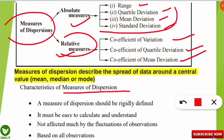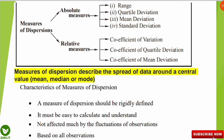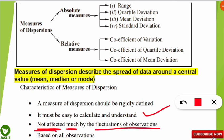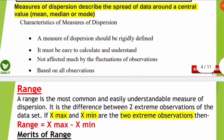Now we will know the characteristics of measures of dispersion, as these questions are also asked in the theoretical part. First, a measure of dispersion should be rigidly defined. Second, it must be easy to calculate and understand. Third, it should not be affected much by the fluctuation of observations — it can be affected, but not much. Finally, it should be based on all overall observations.